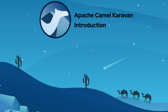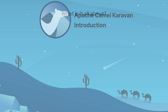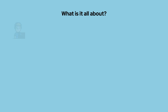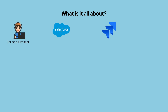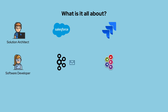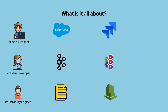Apache Camel Caravan introduction. You are a solution architect making a prototype to get opportunities from Salesforce and create tickets in Jira. Or you are a software developer building a service to receive events from Apache Kafka and publish them into ActiveMQ. Perhaps you are a site reliability engineer working on copying local metrics files to Amazon CloudWatch.